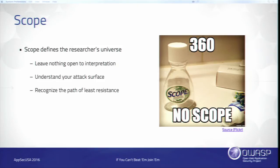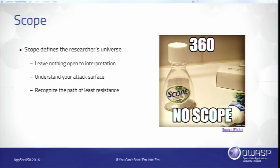Understanding the attack surface is also important. If you say the scope is myapp.com, when a researcher logs in they see login.myapp, accounts.myapp, api.myapp, and all these subdomains. They're stuck wondering whether to test those or not. Spider your application, understand all the different subdomains, and build your scope around that so researchers can be successful in testing on your program.